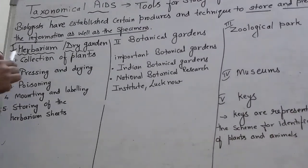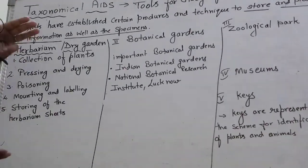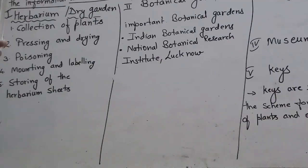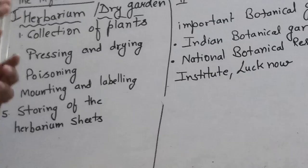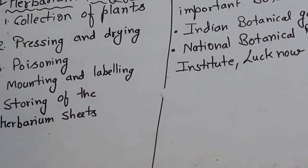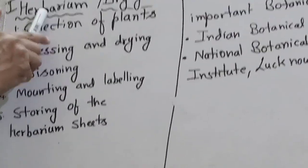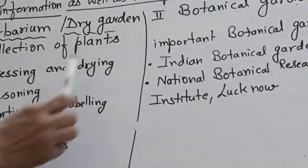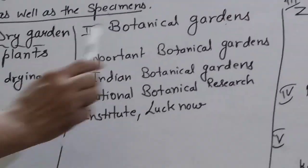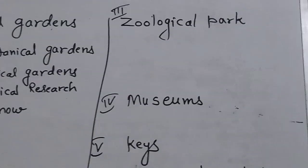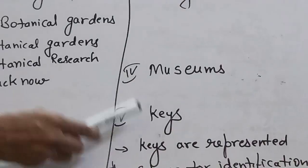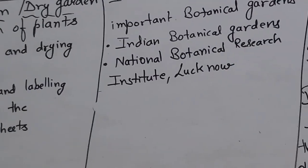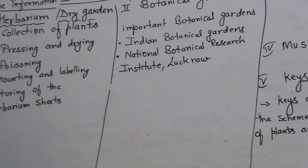Taxonomical aids include: herbarium — big sheets or a file where a plant is described in dry form; botanical garden; zoological parks, as you have visited many times in the zoo; museum; key; manual; and monograph. We are going to discuss each of these. Some remaining aids we will discuss later.